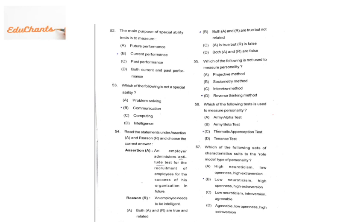Question 52 asks: the main purpose of a special ability test is to measure what? If you want to test the special ability of a person, what is your purpose? The answer is current performance — what the person is capable of right now. For example, if you are very good at high jump, I will assess your special ability right now to know how you perform in competition. That is why the special ability test measures current performance.